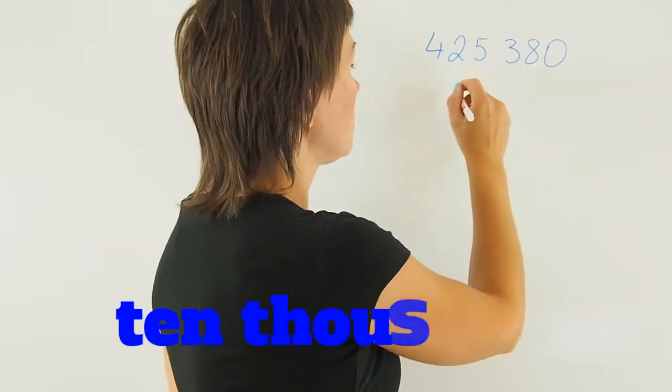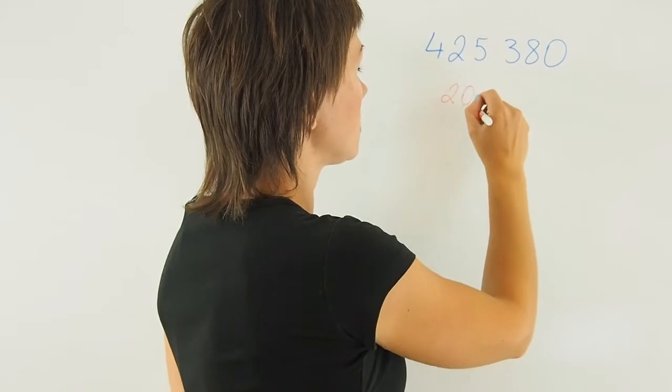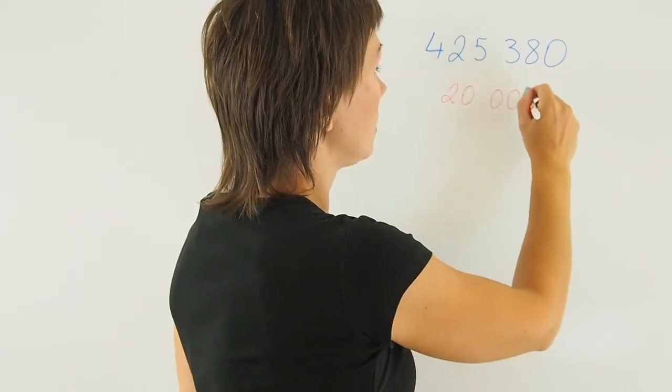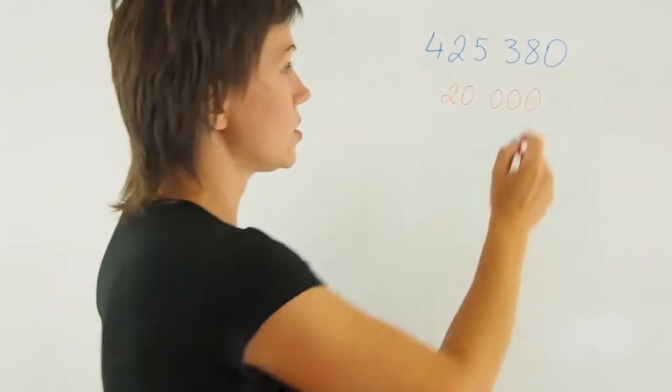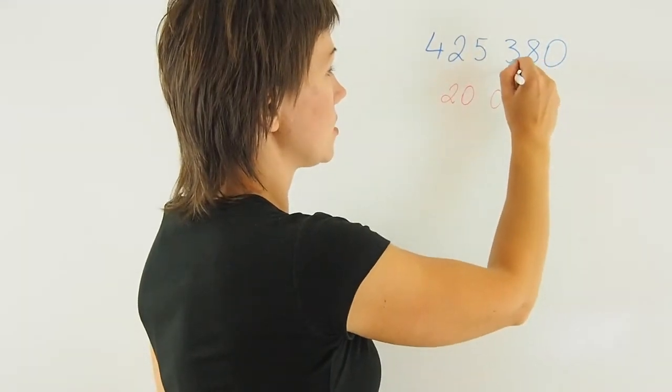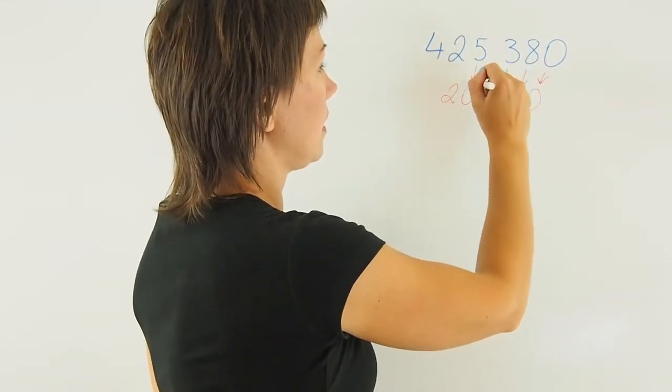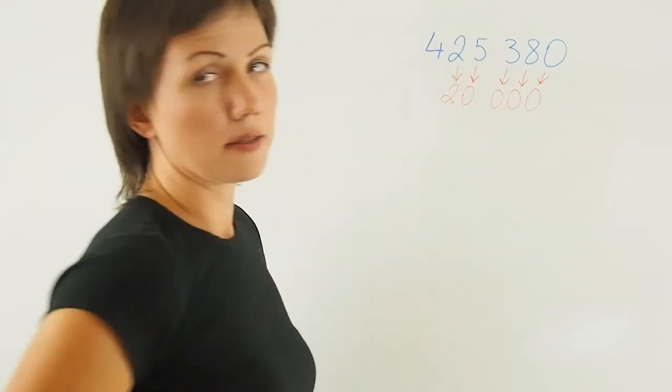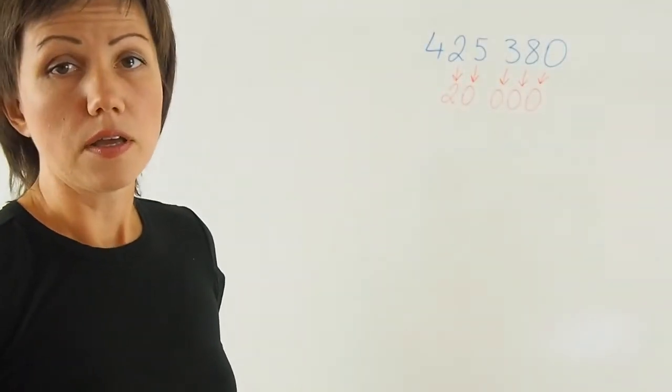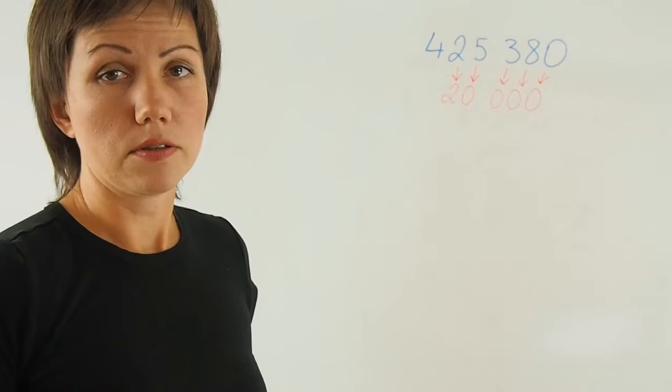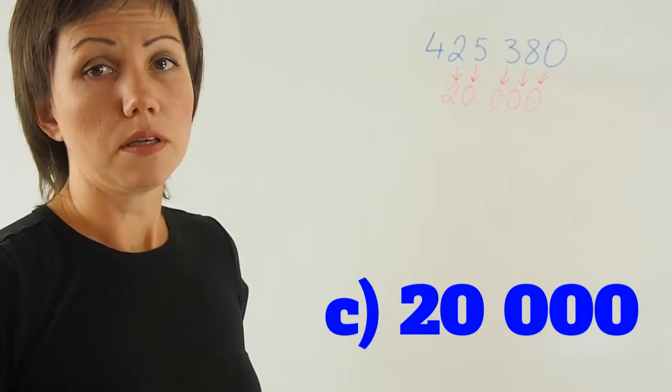That means that this number has a value of twenty thousand. So this zero matches that, this eight matches that, three eight, and this two that. Here you go. So the correct answer to this question will be C.